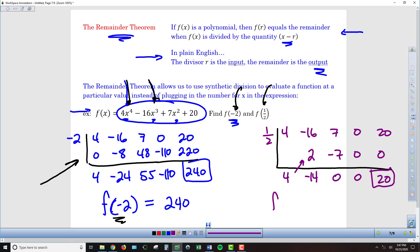So the output when 1 half is the input into this function is 20. And so I would argue that this is a much faster way to get this result using this concept of the remainder theorem, that whatever your divisor is as your input, whatever your remainder is as your output.